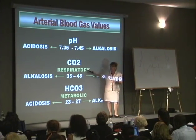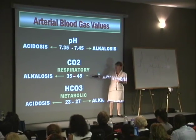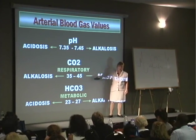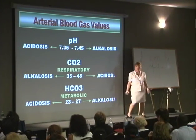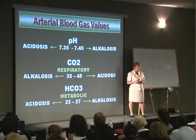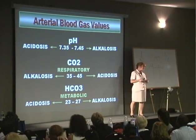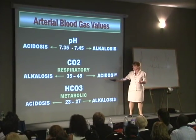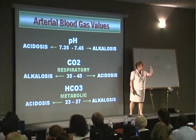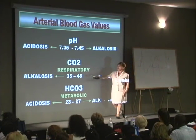CO2 is an acid. It's controlled by the respiratory system. The normal CO2 are the same numbers that are in the pH — it's the 35 to 45 range, so it's easy to remember. If you wake up one day and have a CO2 greater than 45, you're in a respiratory acidosis. Whereas if your CO2 is less than 35 — you blew off your acid — you're in a respiratory alkalosis.